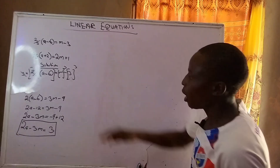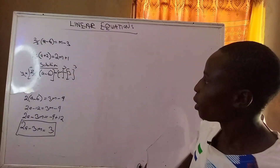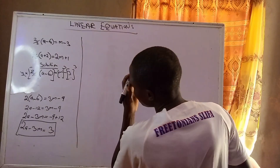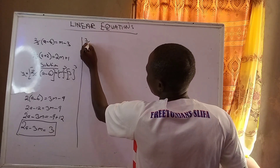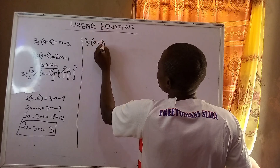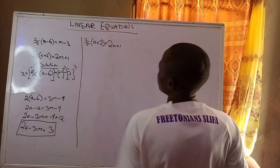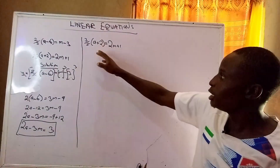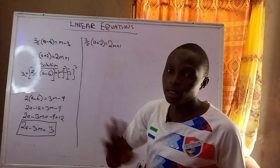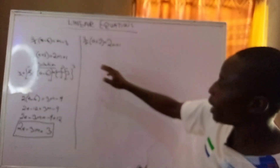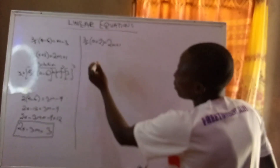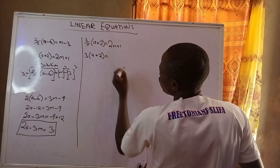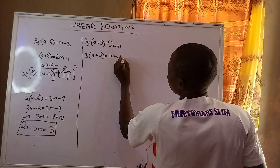I will now pick the second equation and simplify it to get it in the same form. The second equation is: 3 over 5, open bracket, a plus 2, close bracket, equals 2m plus 1. Just as we did before, we multiply each individual term by 5 because 5 is the LCM here. So we get 3 open bracket a plus 2 close bracket equals 10m plus 5.